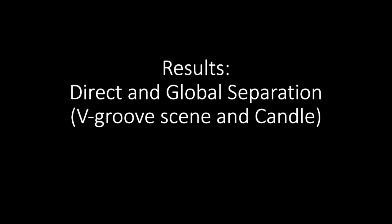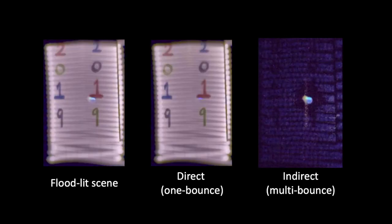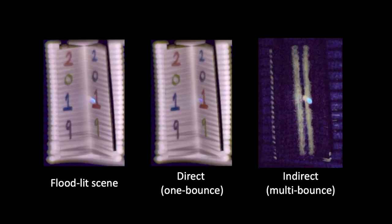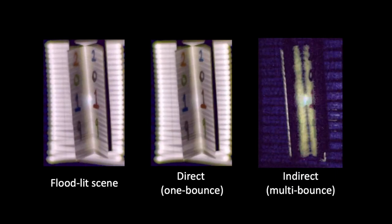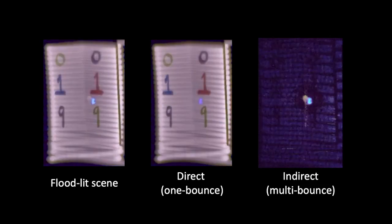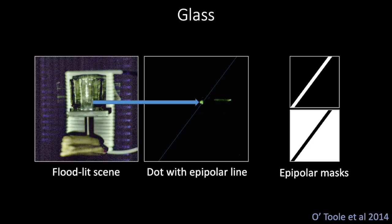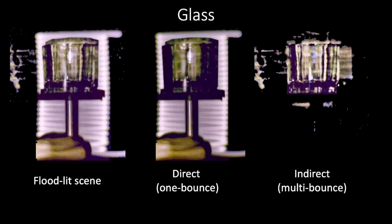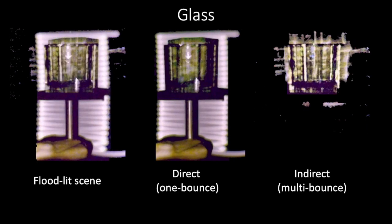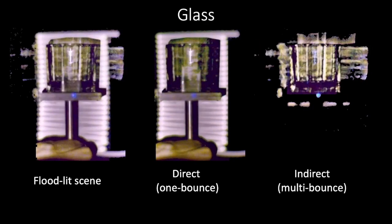We capture the full light transport at each frame, and so we are able to separate direct and global illuminations from a scene. Here we show the v-groove separation. Note that the global illumination is near zero when the v-groove is flat, but becomes pronounced when the v-groove closes. For glass separation, we implement the epipolar constraint recently proposed for separation. For each dot, we get the epipolar line and use masks to accumulate direct and global light separately. Note that the specularity remains in the direct, while the global shows all the caustics.